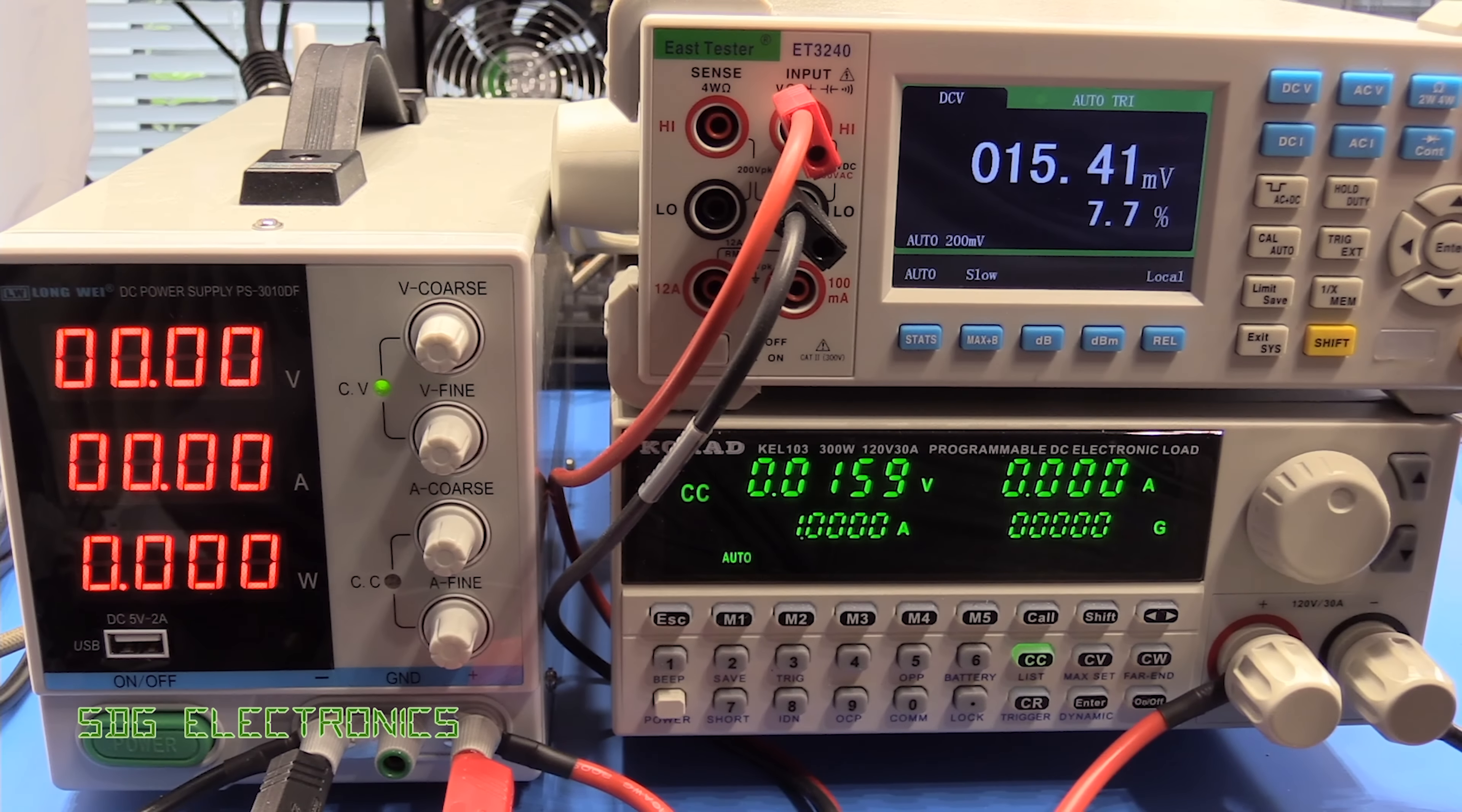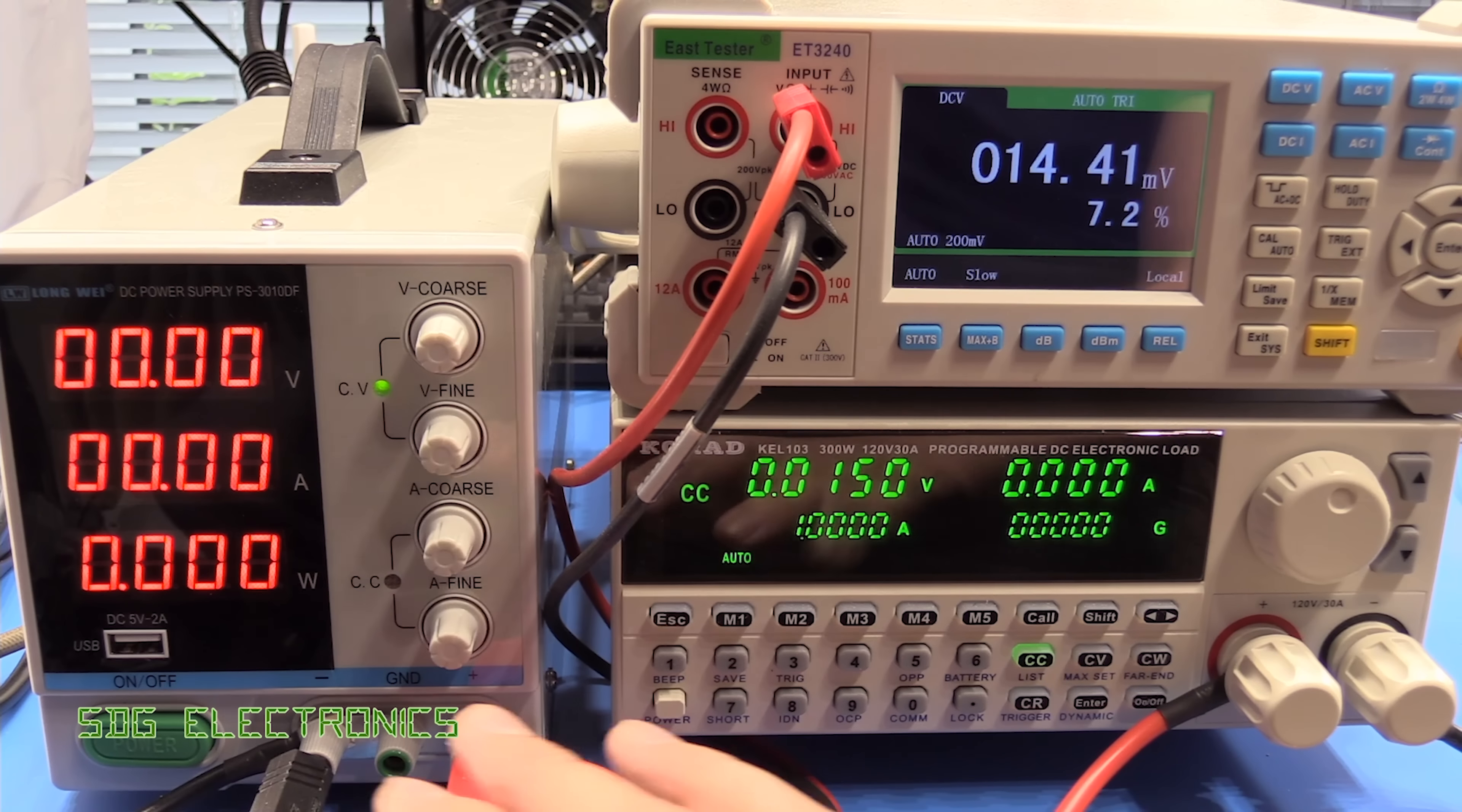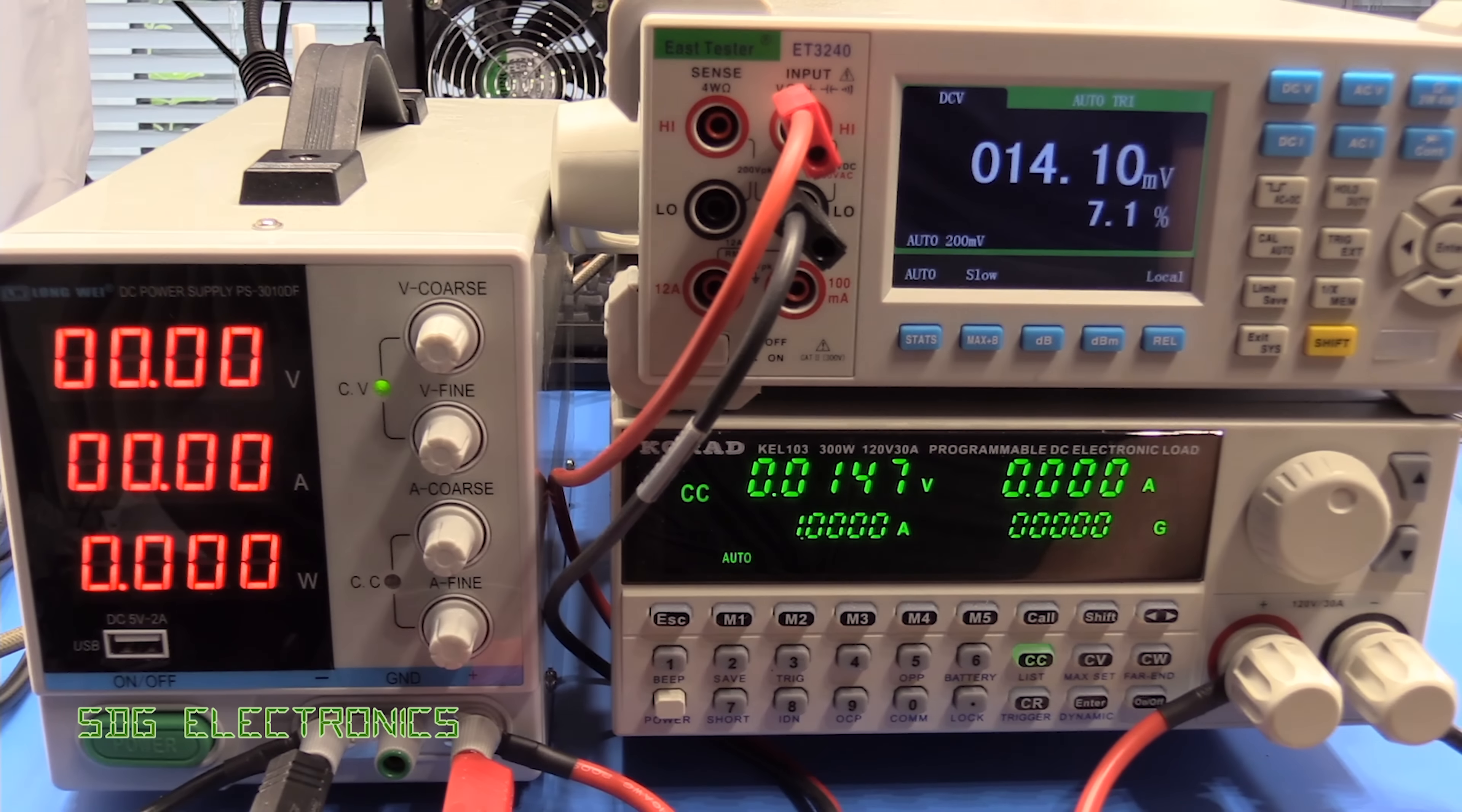So we've got the power supply hooked up to the multimeter and also to the DC load. This is a new one that you've not seen before. A very nice piece of equipment, so I'll do a review on this in the coming weeks. And the multimeter is connected directly to the output terminals. I've not connected up the sense terminals, so we've just got these two thick wires between the DC load and the power supply.